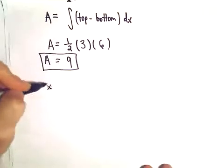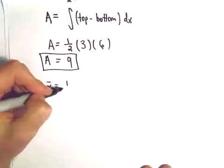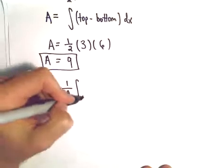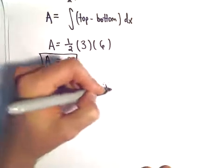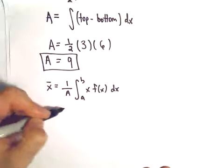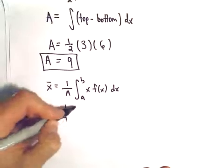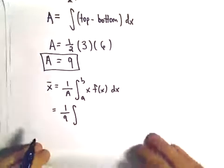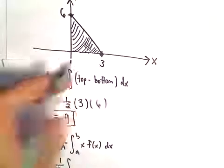To get our value for x-bar, we take 1 over the area, and we integrate from a to b of x times our function. So we would have 1 over 9, the integral from, well let's see, our limits of integration will be from 0 to 3.